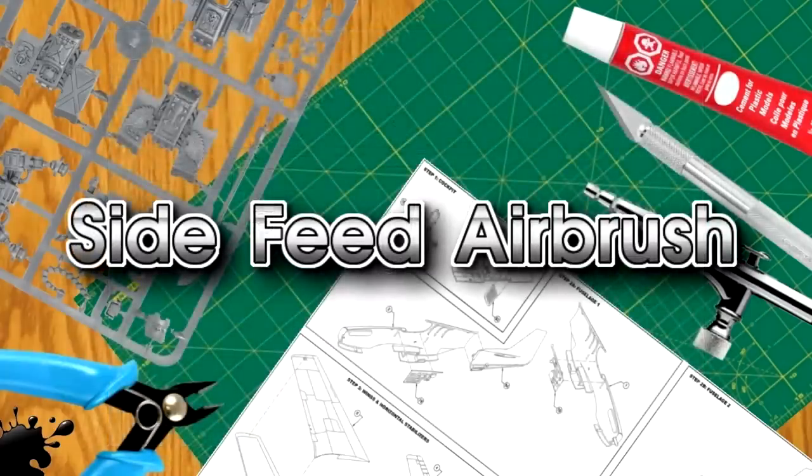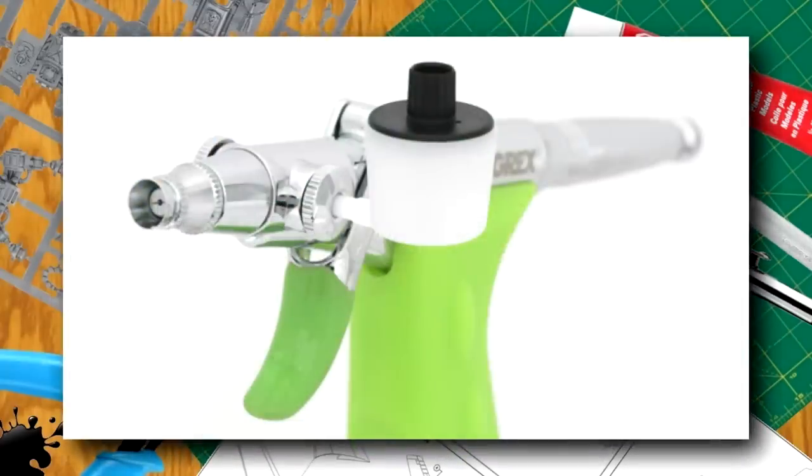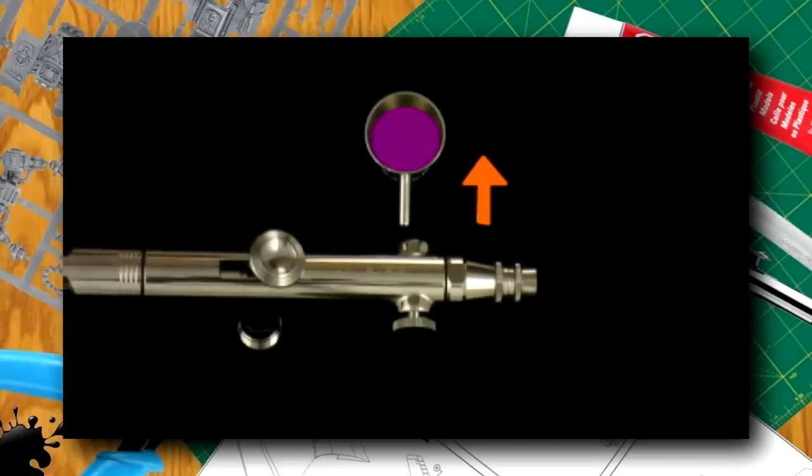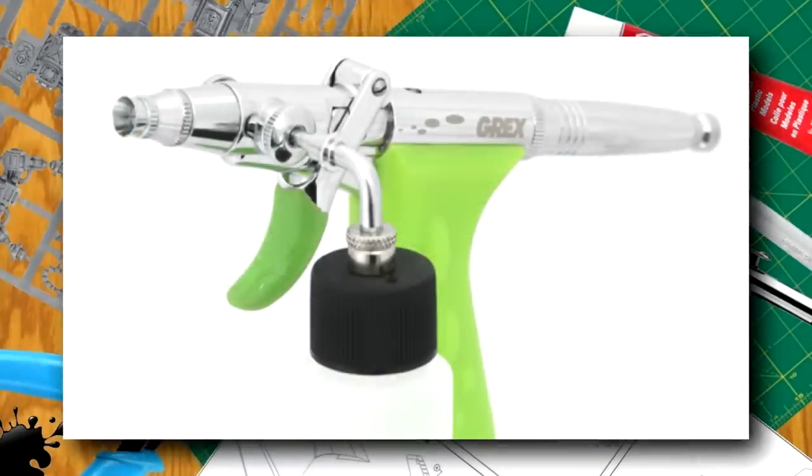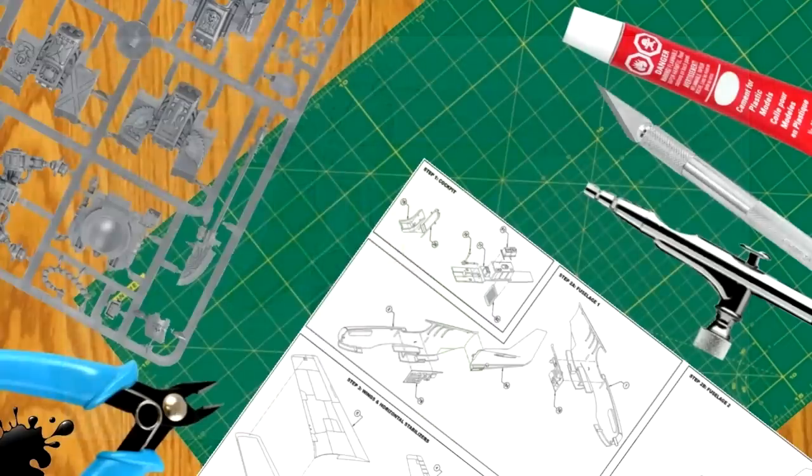Side feed refers to airbrushes where a color cup fits into the side of the airbrush. The side feed color cup rotates enabling the user to work on either a horizontal or vertical surface. The side feed also permits the user to achieve fine detail without the possible sight obstruction of a top mounted color cup.